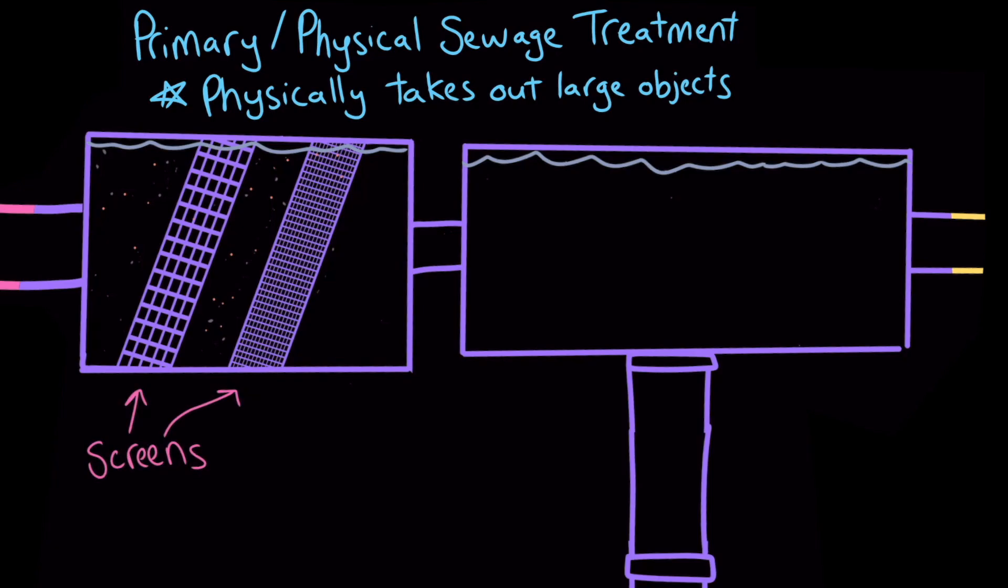The screens sift out objects like sticks, rocks, rags, plastic bottles, and Rubix's hair. Even though the screens take out many of the larger objects, there's still a lot of grit in the water afterwards.